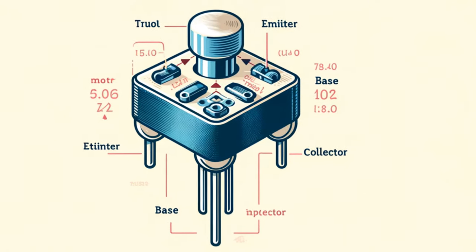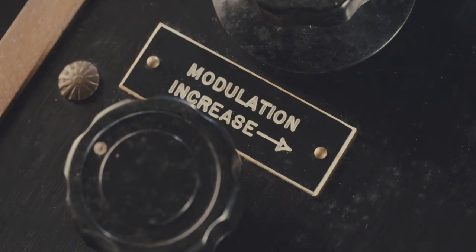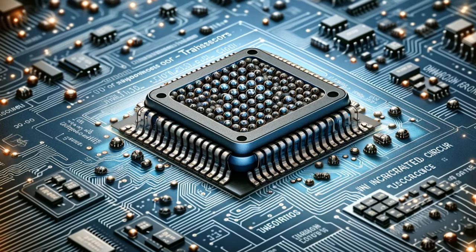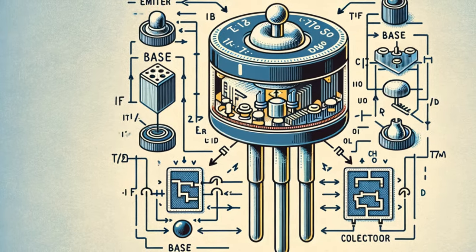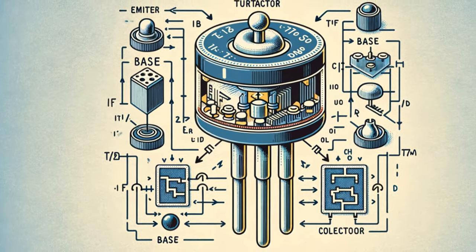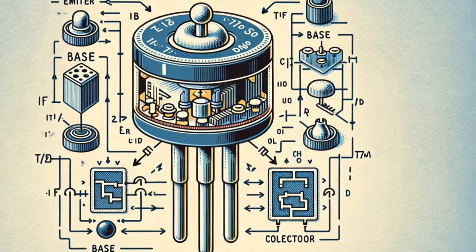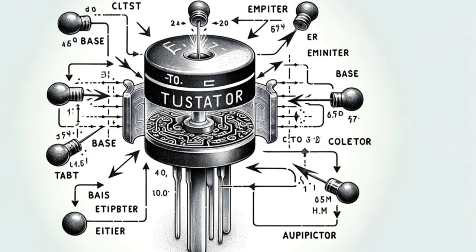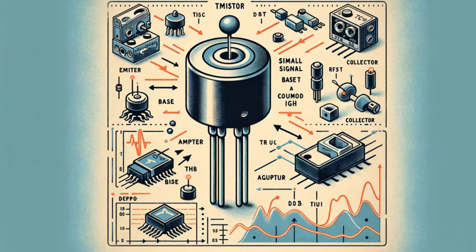Transistors — the tiny switches that power our world. Transistors are miniature electronic switches that can amplify or switch electronic signals and electrical power. They are the fundamental building blocks of modern electronics, enabling the creation of integrated circuits that contain billions of transistors on a single chip. A transistor consists of three semiconductor regions: an emitter, a base, and a collector. The base region controls the flow of current between the emitter and the collector. By applying a small voltage to the base, we can control a much larger current flowing between the emitter and the collector. This ability to amplify signals is what makes transistors so versatile and powerful.